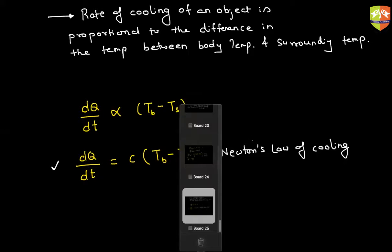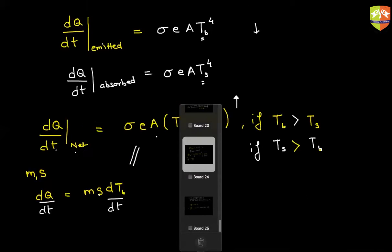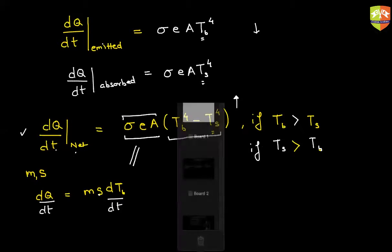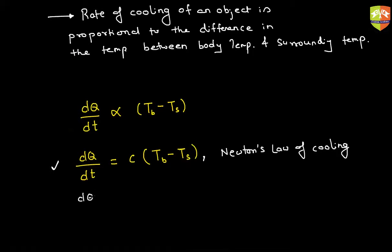Now let me go to the earlier slide to show you the problem. Here DQ/DT equals a constant — sigma — times T to the power four minus TS raised to the power four. So what Stefan-Boltzmann tells us is DQ/DT equals some constant C2 times TB raised to the power four minus TS raised to the power four.